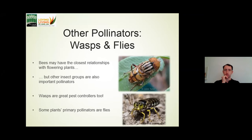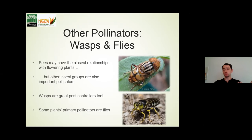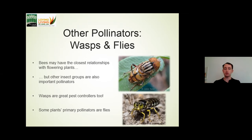To finish up, I want to touch on a couple of other pollinator groups beyond bees. Wasps, for example, are not just pollinators — they also have the dual role of being fantastic pest controllers. Although the adults primarily feed on nectar and are involved in pollination interactions, their larvae are often carnivorous and fed on pest species. There are also certain plants that are only pollinated by flies, and there are lots and lots of fly species, so it's worth remembering they play a role too.